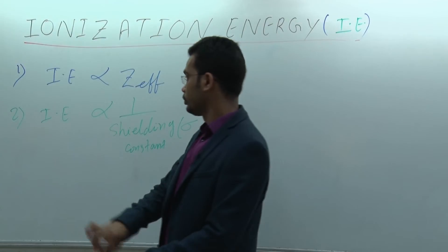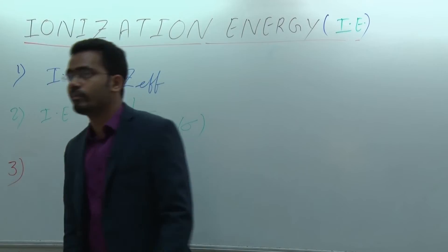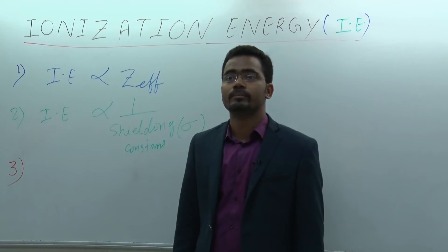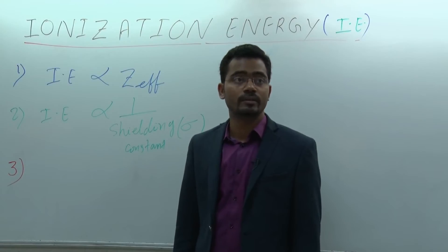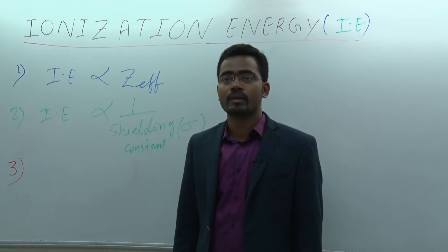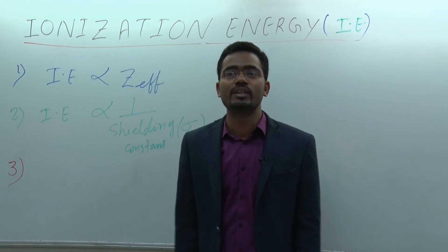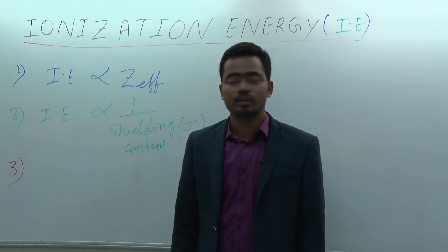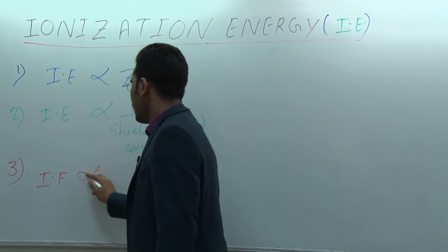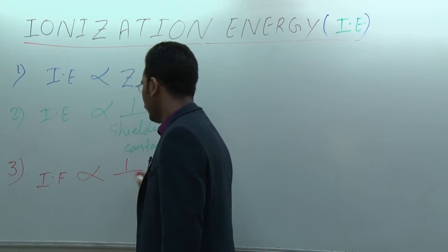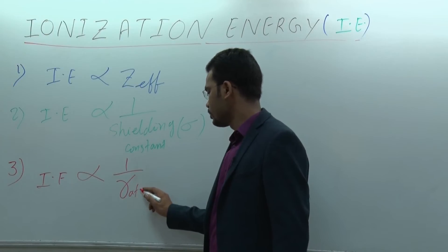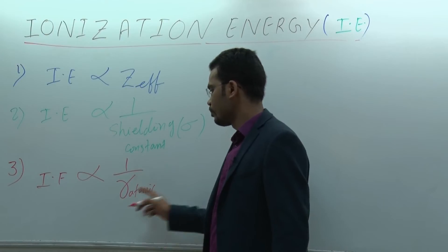The third factor: if the distance of the valence electron from the nucleus increases — meaning the electron is farther from the nucleus — then ionization energy is inversely proportional to atomic radius. So atomic radius is the third factor affecting ionization energy.